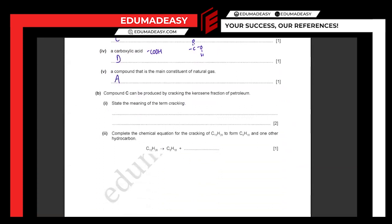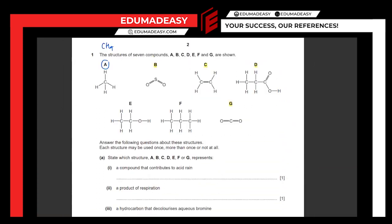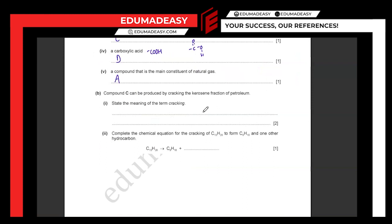Compound C can be produced by cracking the kerosene fraction of petroleum. Compound C has two carbons. Using the mnemonic 'monkeys eat peeled bananas': M is one carbon, E is two carbons, P is three, and B is four. So compound C is going to be ethene. Ethene can be produced by cracking the kerosene fraction of petroleum — cracking is a way we can produce alkenes.